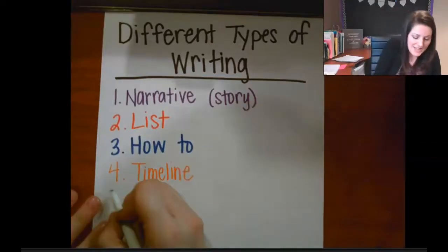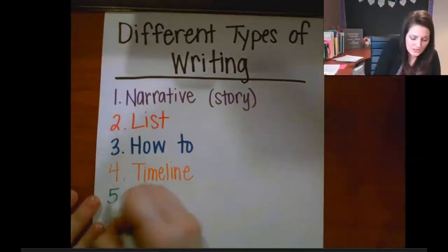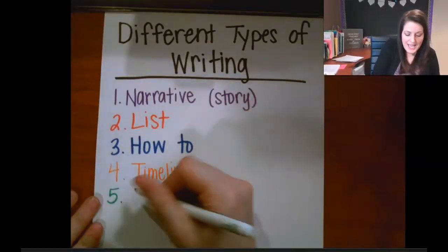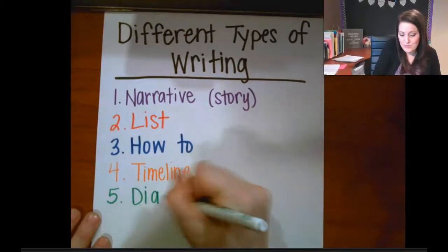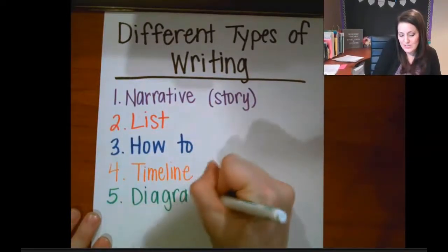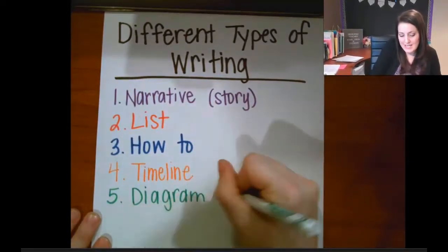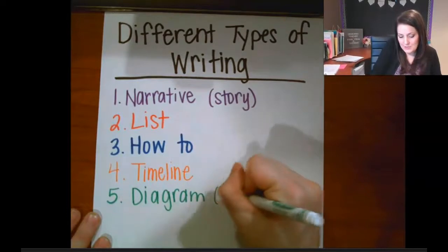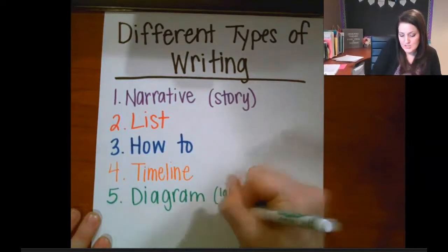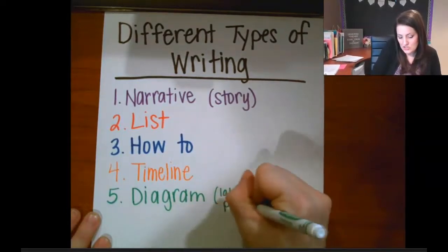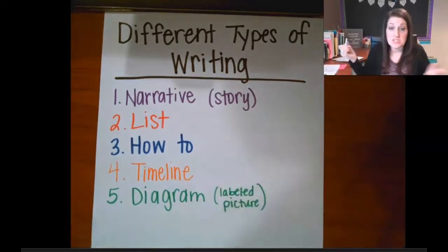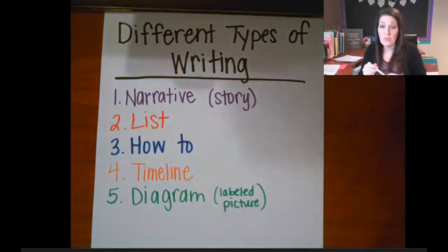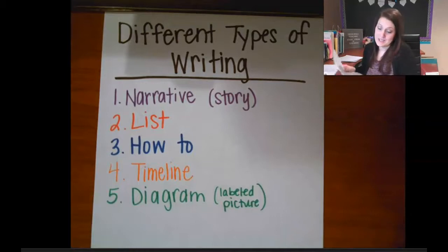Number five is going to be a diagram. A diagram is a labeled picture — not just one label, but where there are lots of things labeled.